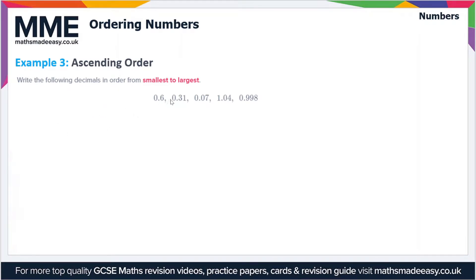Moving on to example three, write the following decimals in order from smallest to largest, so ascending order, and they're all decimals: 0.6, 0.31, 0.07, 1.04, and 0.998. Four of these five numbers begin with zero, so we'll cross out the one that doesn't for now. Looking at the second digit we've got 6, 3, 0, and 9. The one with zero is smallest, that's 0.07.